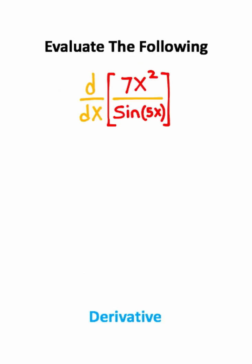We want to take the derivative of the following function, and since I see we're taking the derivative of a quotient, we're going to need to use something called the quotient rule.